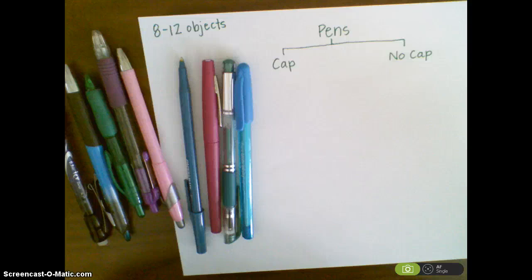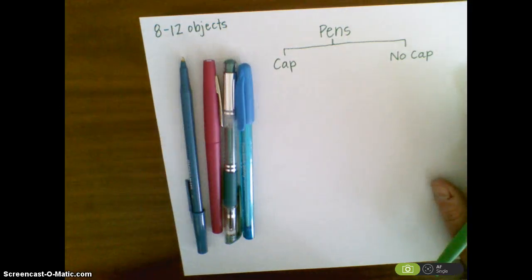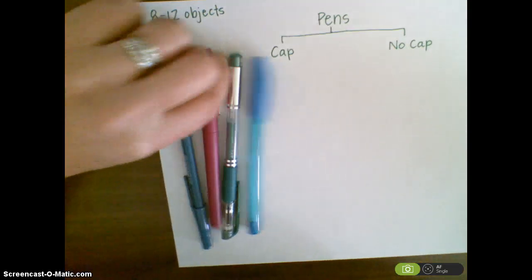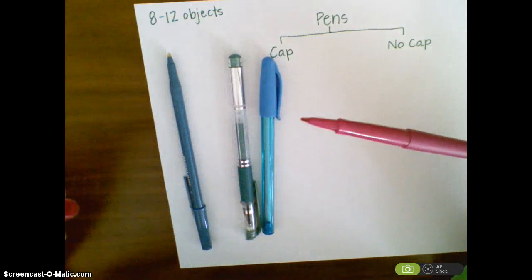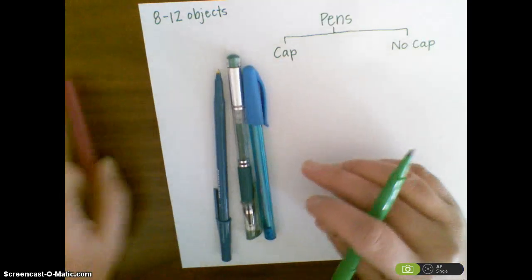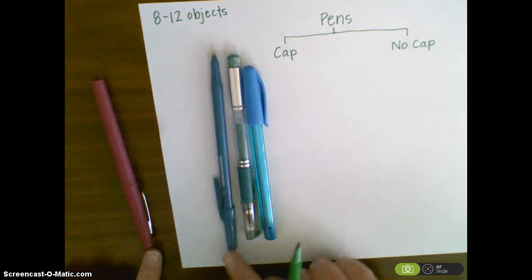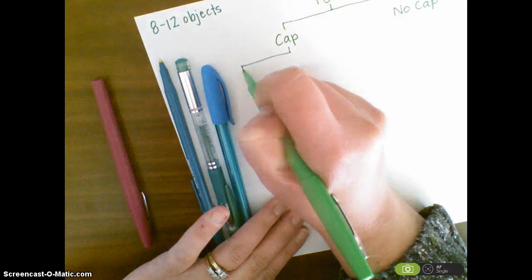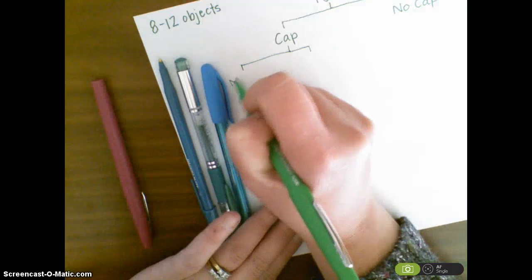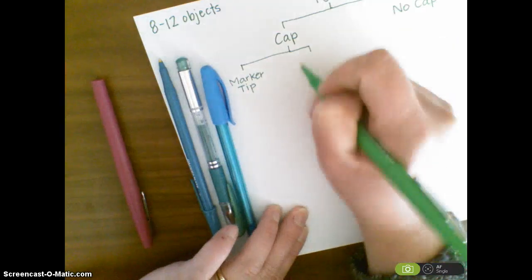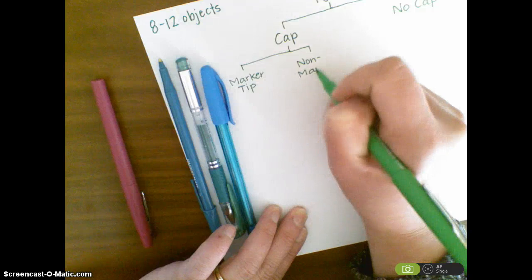Now that you've put your items into two separate categories, look at just one category. I'm going to take all my capped pens and figure out how I can separate them into two groups. I notice these pens actually have a marker tip, whereas these don't. So I've made two categories: 'marker tip' and 'non-marker tip' within my capped pens.